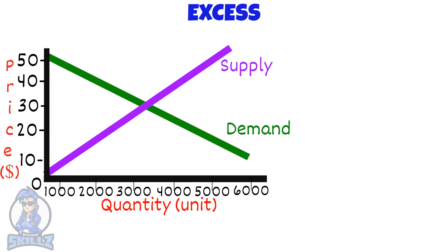Now let's look at something known as excess demand. This graph has an equilibrium price at P1, but if sellers decide to price it at P2 instead, there would not be enough goods for all the customers. This means there is excess demand.